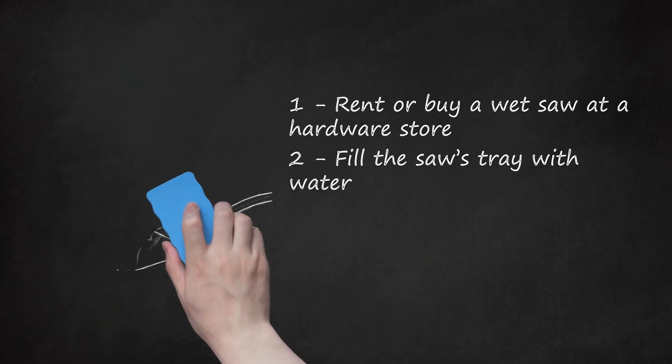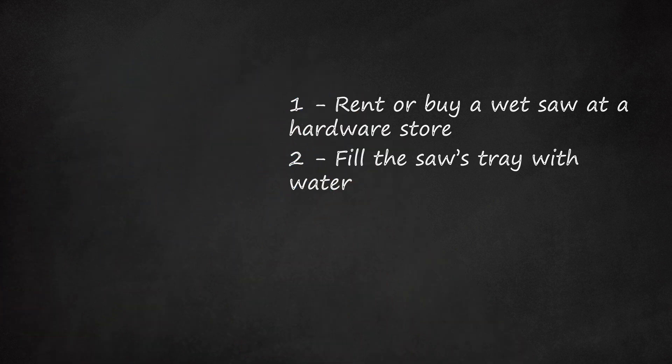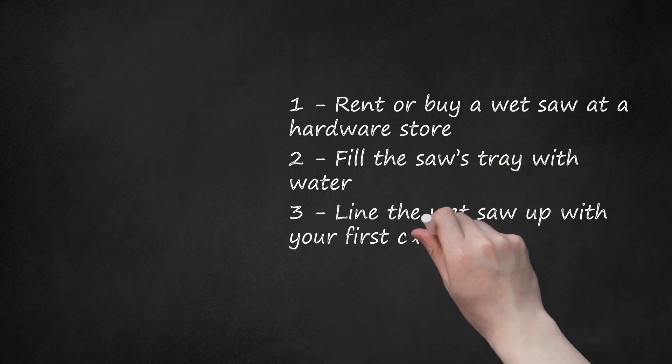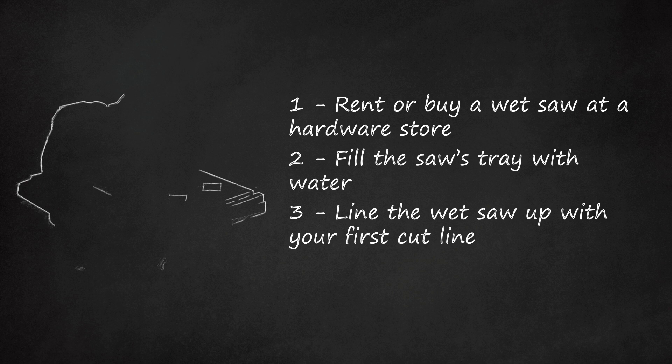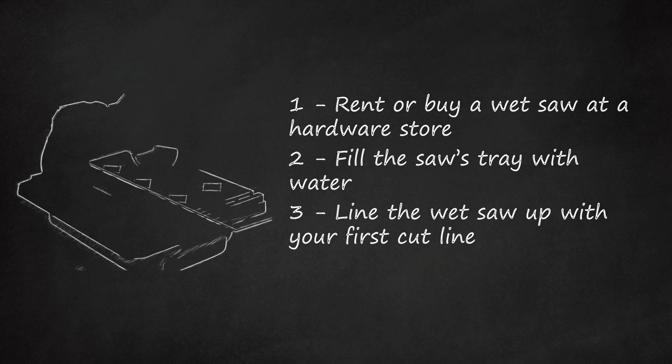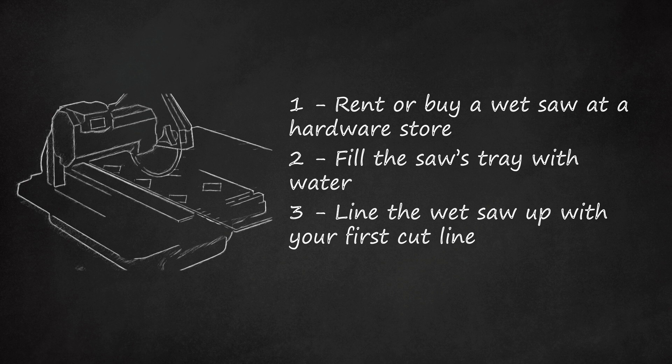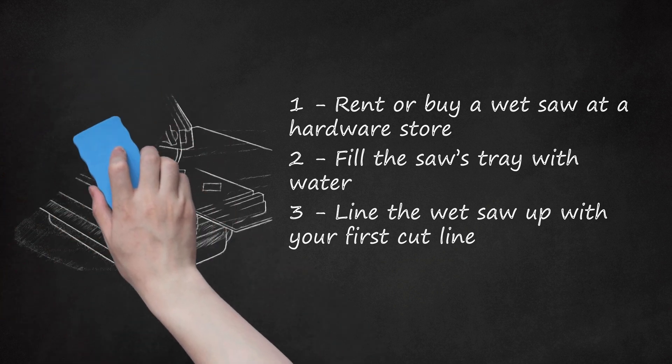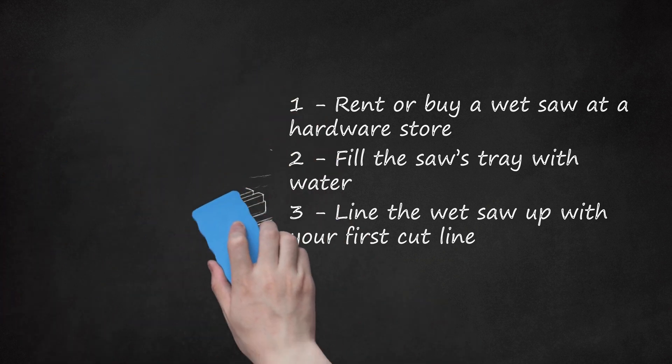Line the wet saw up with your first cut line. Precise measurements and accurate cut lines are important no matter which cutting technique you employ. After measuring and drawing your cut lines on the surface of the glass with a straight edge and a sharpie, carefully line up the saw's blade with your first cut line. Make sure that your hands and clothing are well out of the way of the blade before you turn it on.